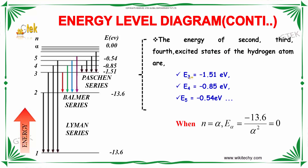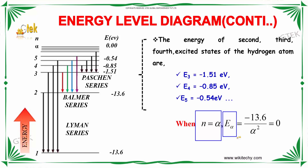E3 is minus 1.51 eV, E4 is minus 0.85 eV, E5 is minus 0.54 eV. When n is equal to infinity, E infinity is equal to minus 13.6 divided by infinity squared, which is equal to 0.